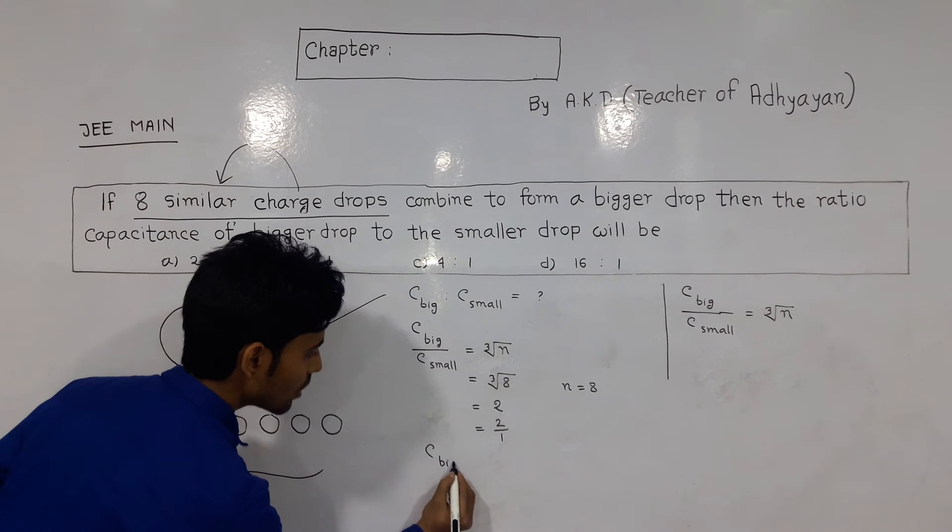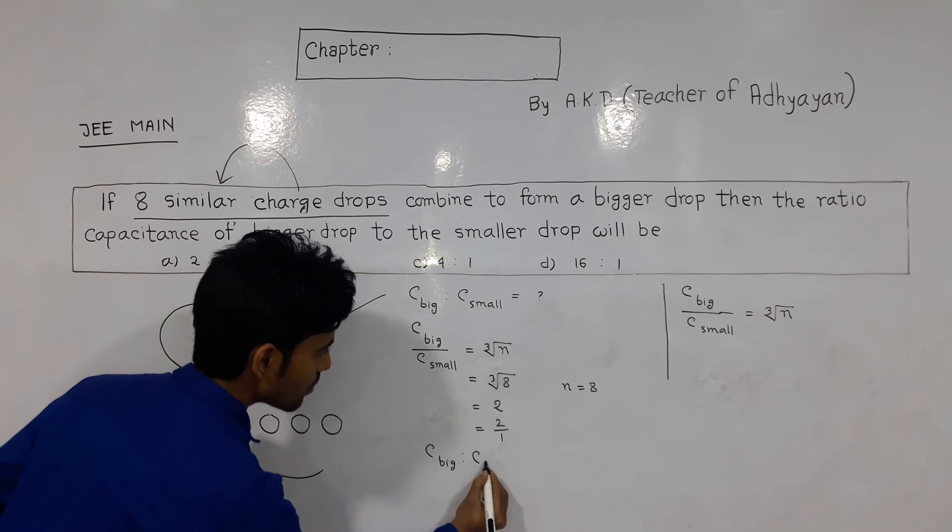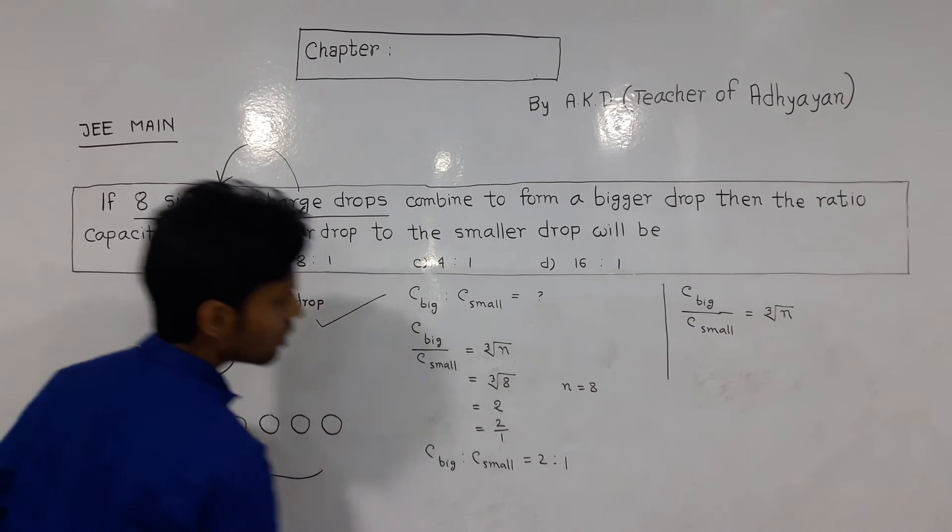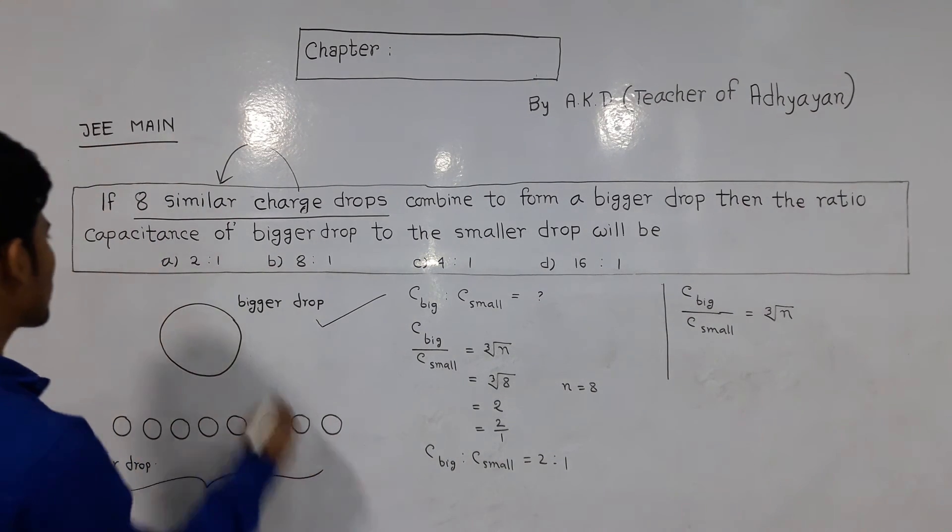So C_big is to C_small equals 2 is to 1. Therefore, the answer is option A.